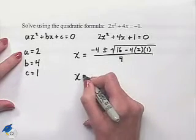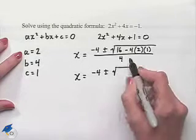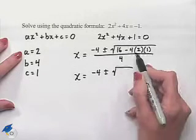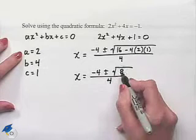Let's simplify underneath the radical. X is going to equal negative 4 plus or minus the square root of, we have 16 minus the product of 4, 2, and 1. That's 16 minus 8, which is going to be 8.